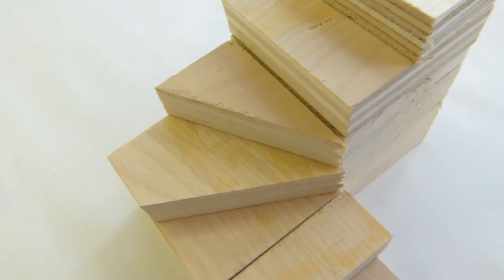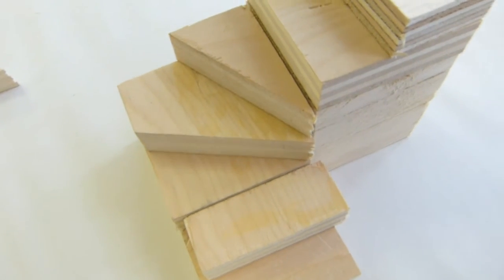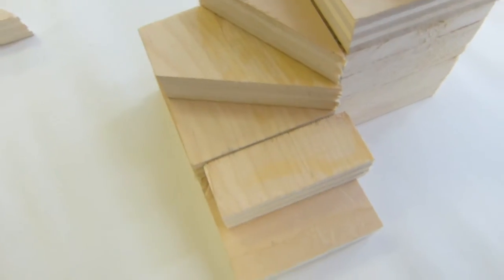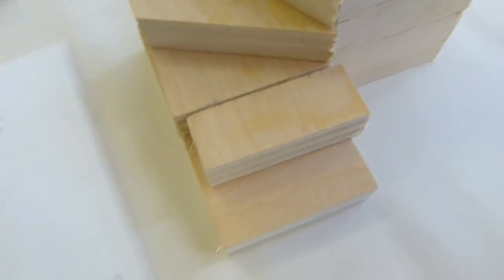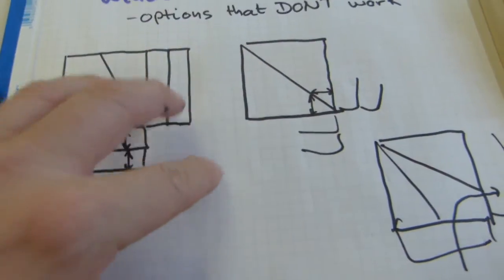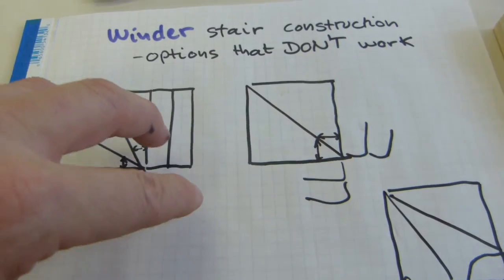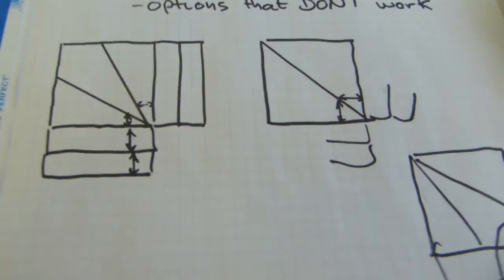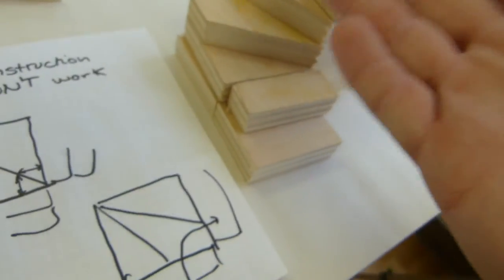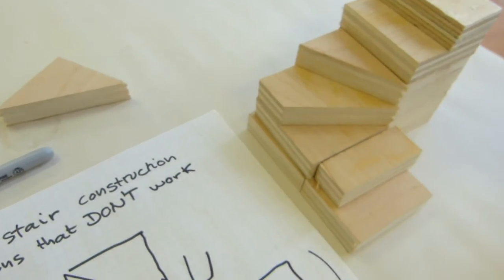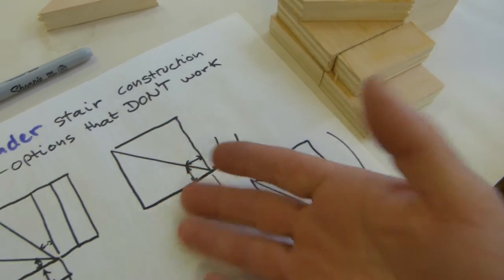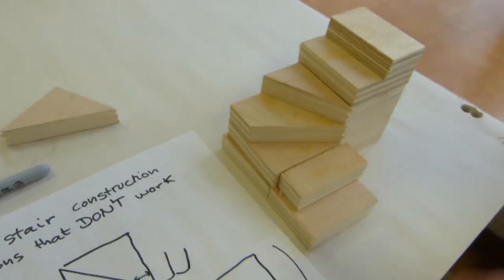So I just wanted to show you these two non-functional solutions to this winder stair problem using this 3D model here, because it's possible for me to draw a proper view from up top and from looking at it from the side, but you really need to see this in 3D to connect the concepts here, to see why these two options don't work. So there you have it.